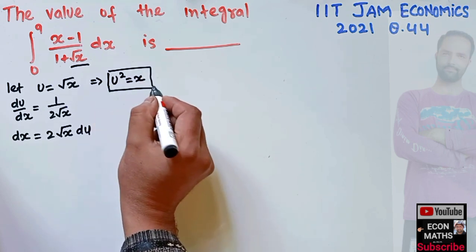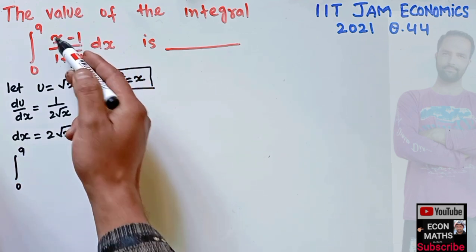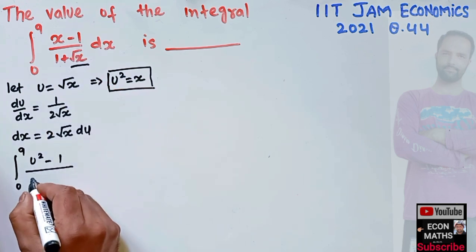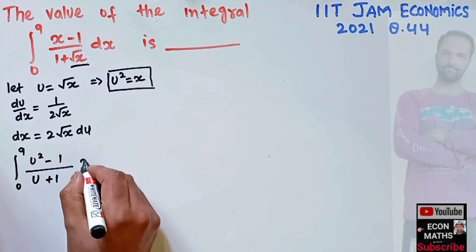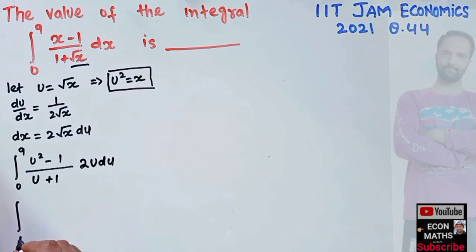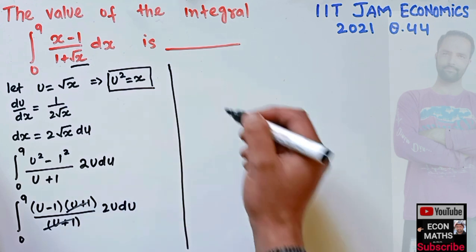Now the given question is the definite integral from 0 to 9. In place of x we have u², so u² - 1, and √x = u. This gives us the integral from 0 to 9 of (u² - 1)/(u + 1) times 2u du. Using the formula a² - b², this is (u - 1)(u + 1)/(u + 1). The (u + 1) terms cancel, we are left with the integral from 0 to 9 of 2u(u - 1) du.